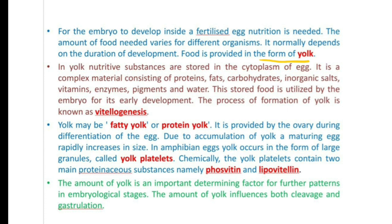In yolk, nutritive substances are stored in the cytoplasm of the egg. It is a complex material consisting of proteins, fats, carbohydrates, inorganic salts, vitamins, enzymes, pigments and water. The stored food is utilized by the embryo for its early development. The process of formation of yolk is known as vitellogenesis. Yolk may be fatty yolk if the lipid content is higher, or protein yolk if the protein content is higher. It is provided by the ovary during the differentiation of the egg.